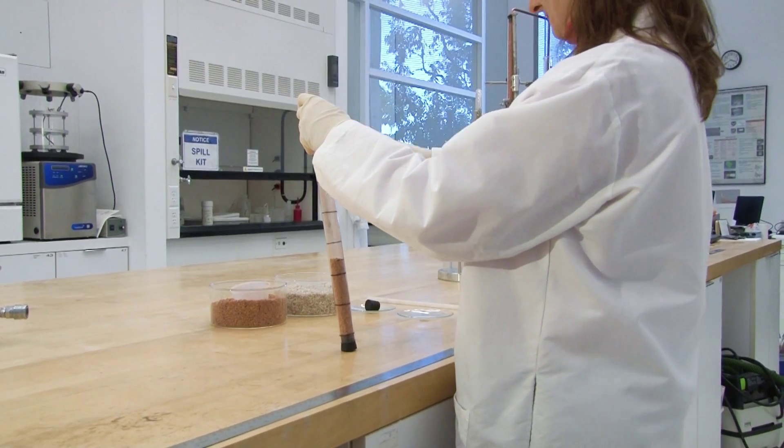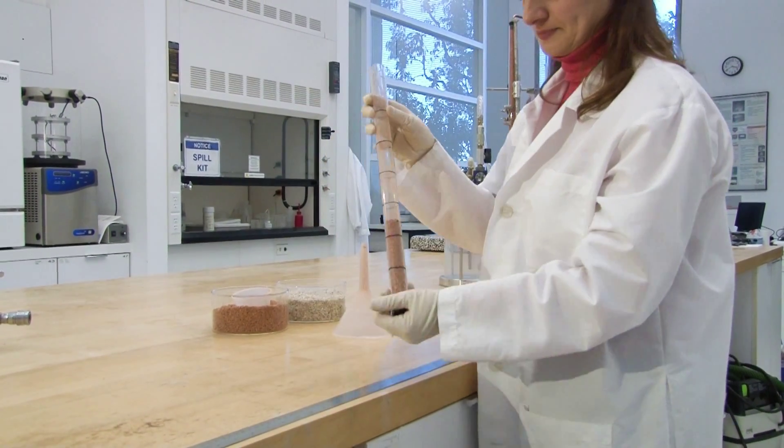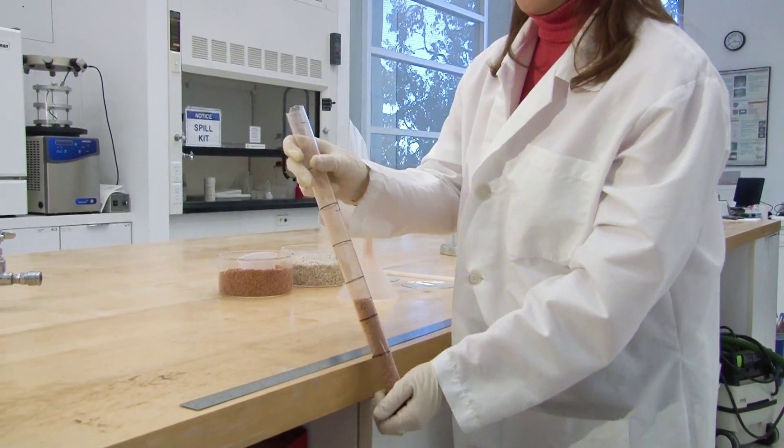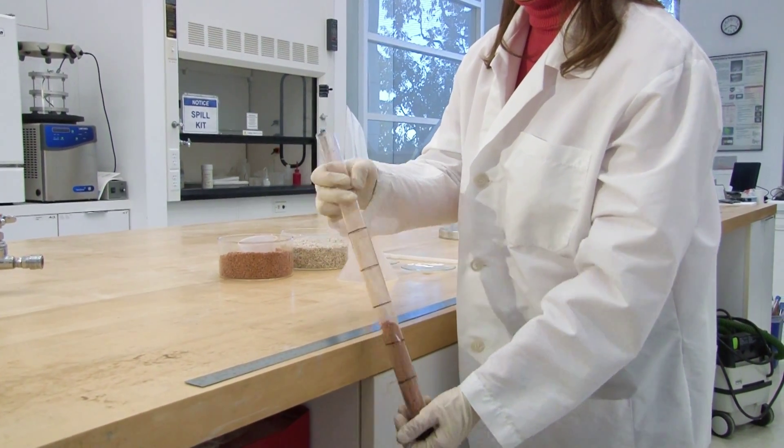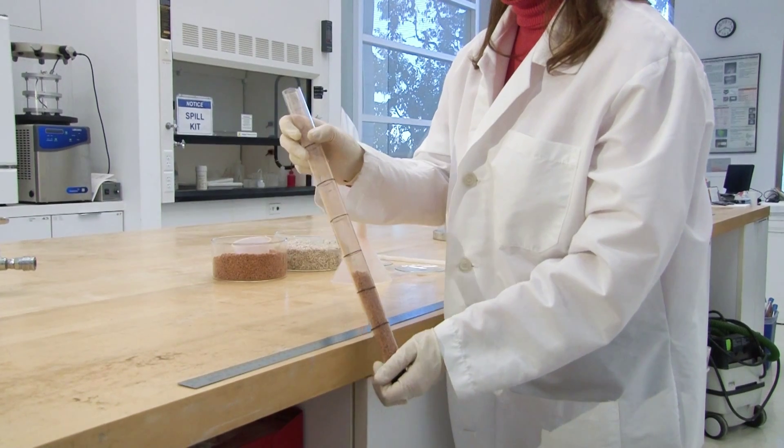After filling the first layer, apply 50 lateral shocks by slowly hitting the vertically held column against the edge of a table while holding it from the bottom end.